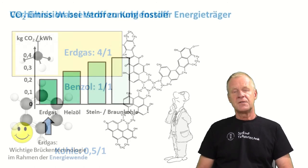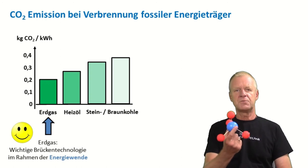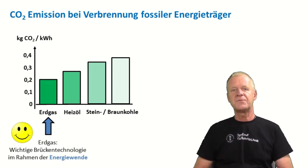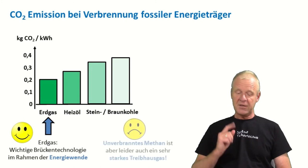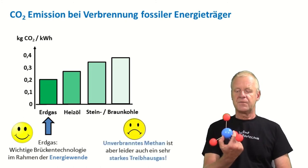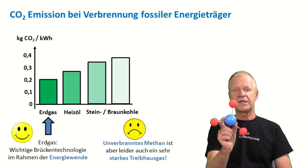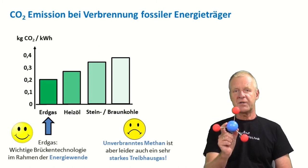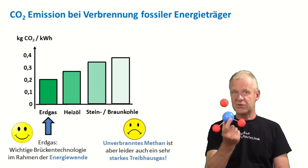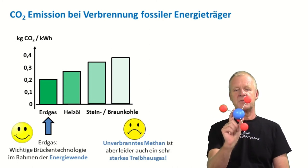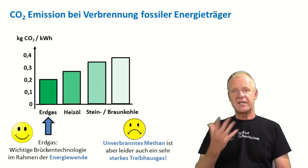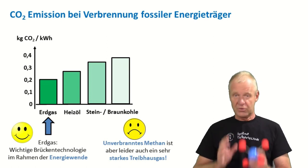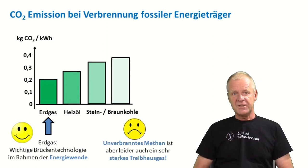This is one reason it is considered a very important bridge technology within the energy framework. When used, it simply produces the least environmentally harmful emissions. But we have to take care that no methane escapes unburned into the atmosphere. This is because methane in the atmosphere is a very strong greenhouse gas that contributes even stronger to global warming than CO2. So, we have to be very careful with the production and the use of natural gas and we have to work very carefully.